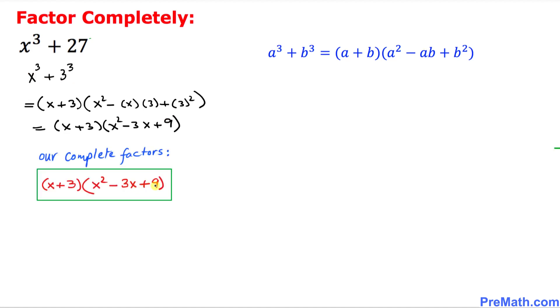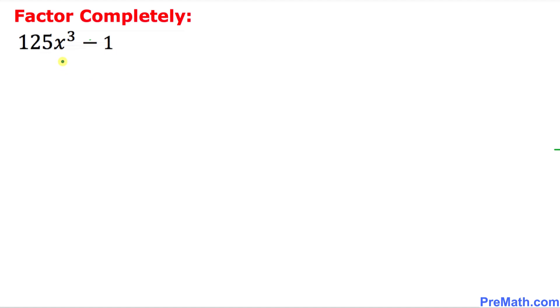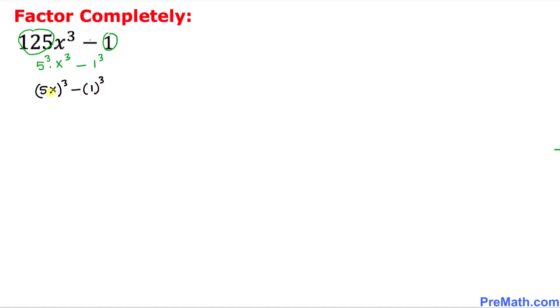These are our complete factors and that is our answer. Here is our next example: 125x³ - 1. Let's go ahead and manipulate it a little bit. 125 can be written as 5³, leave x³ as it is, and 1 can be written as 1³. So this becomes (5x)³ - 1³, and this tells us we have a difference of two cubes.